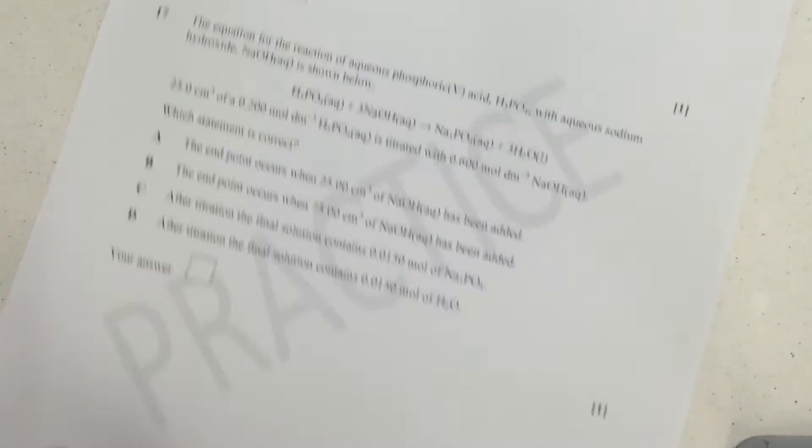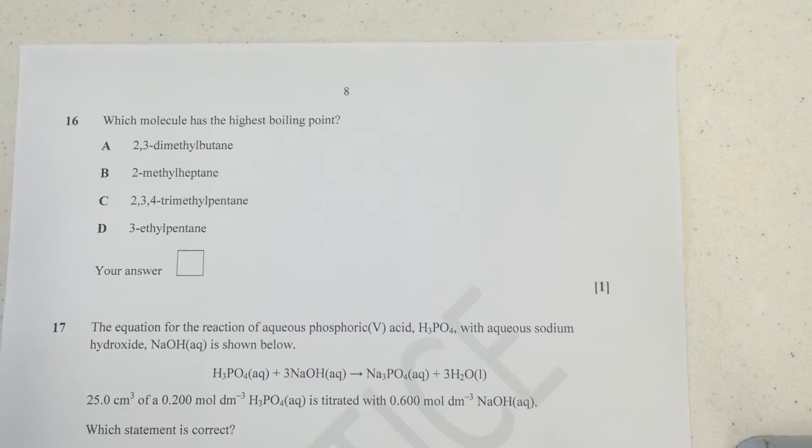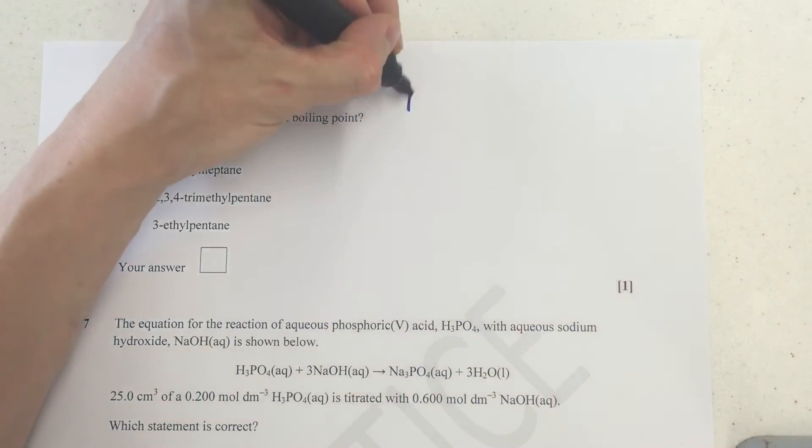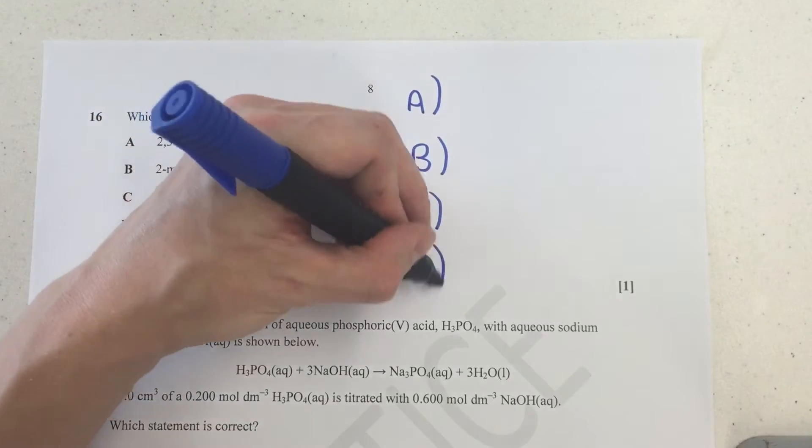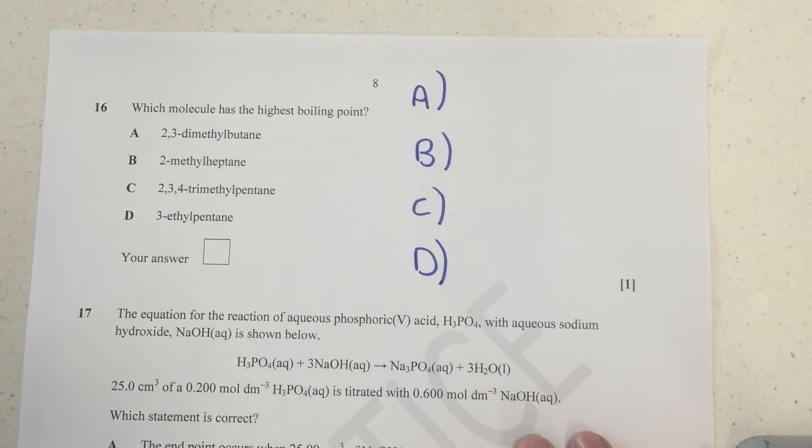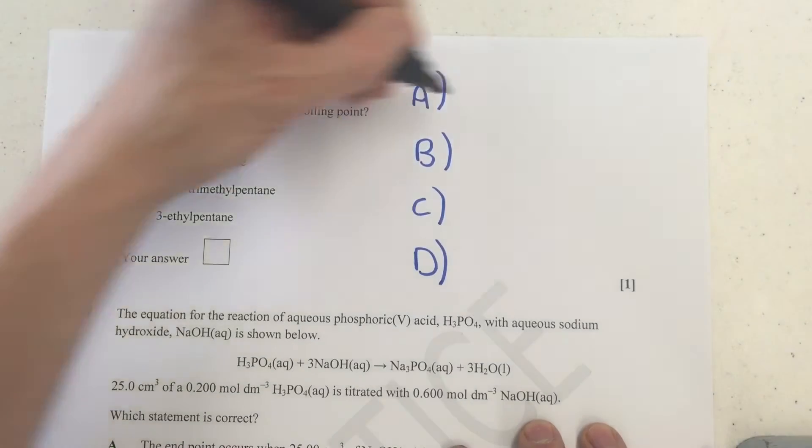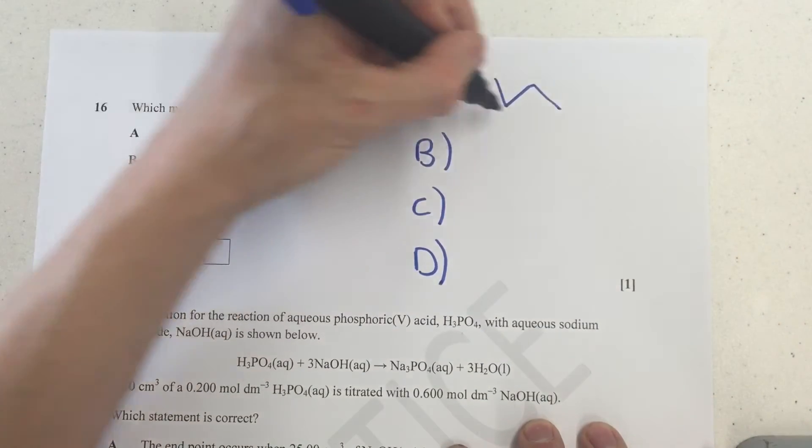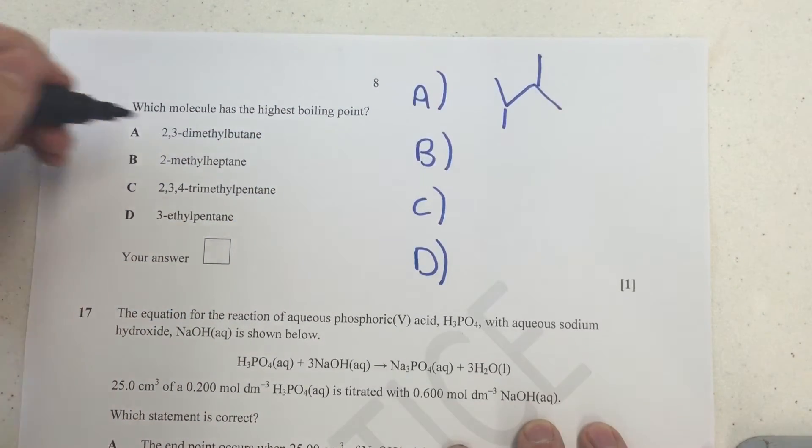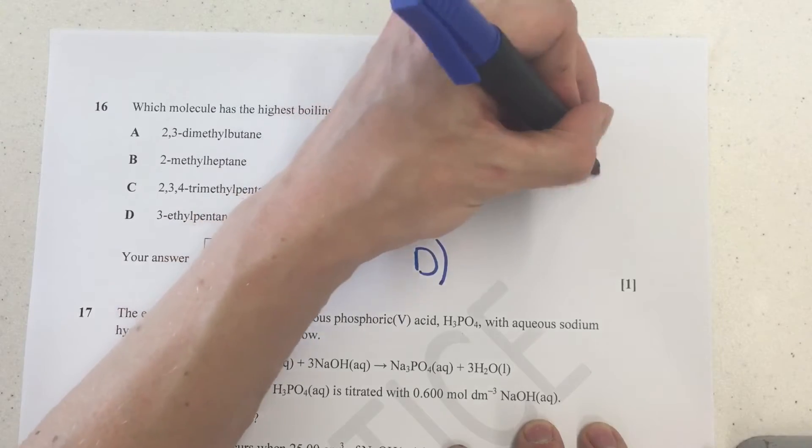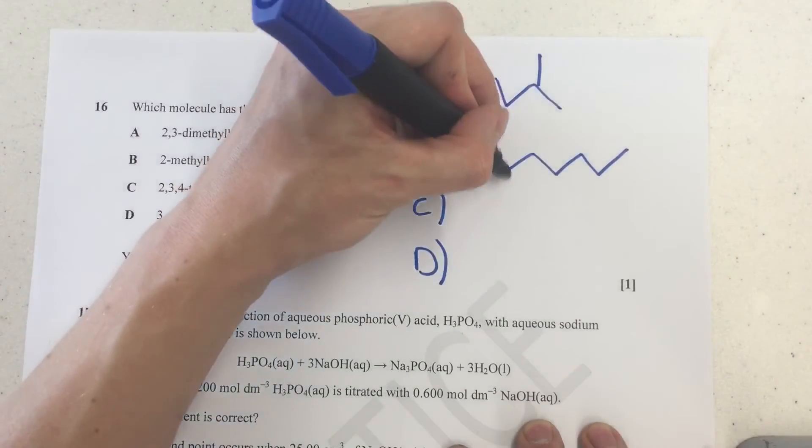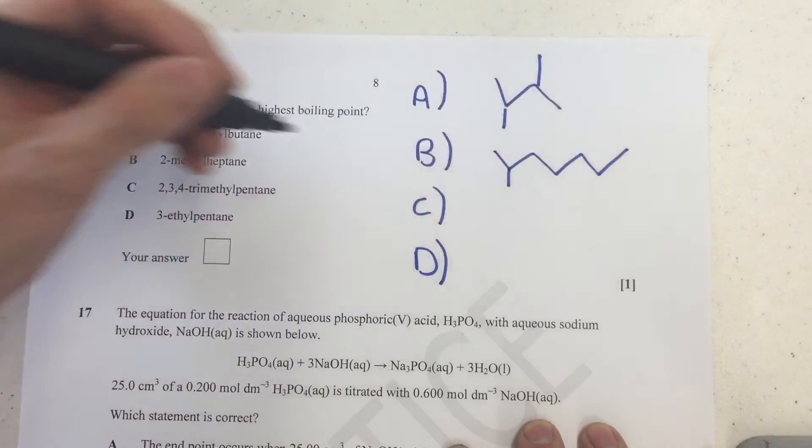Moving on then to question 16. Question 16 is a bit of a tricky one. What I did for this one is I drew out the skeletal structure of each of them. So I'm just going to draw those out briefly here. If you're quick with skeletal, then this is how I recommend you do it as well. 2,2-dimethylbutane looks like that. 2-methylheptane. Quite good. So hept is 7. So 1, 2, 3, 4, 5, 6, 7. And 2-methyl, put it there. That's quite a long open chain there actually.